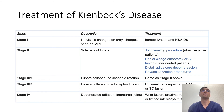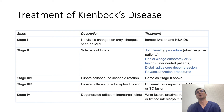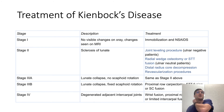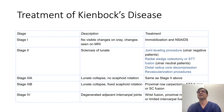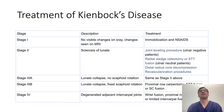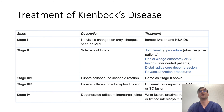Once you hit stage two of Kienböck's disease, management is all surgical. The surgical management chosen is dependent on the underlying pathology. If you have a negative ulnar variance, you would use a joint leveling procedure or radial osteotomy. If you have ulnar neutral or ulnar positive patients, you can use a radial wedge osteotomy or an STT partial fusion. Also commonly used now are revascularization procedures where you get a vascularized bone graft and place it in the lunate to try and recreate blood supply and bone.